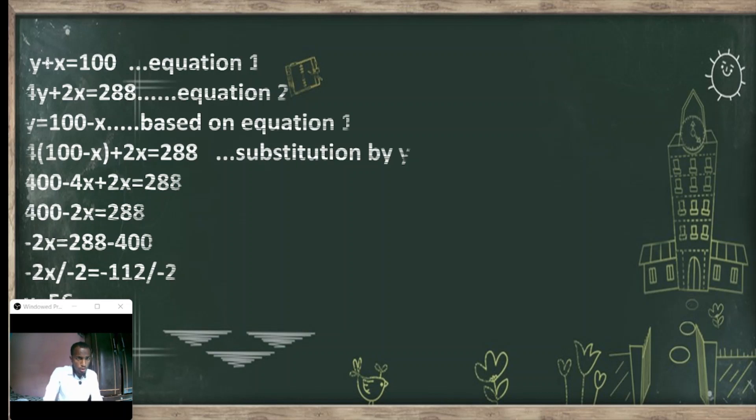Based on equation 1, y equals to 100 minus x. We take x to the right side, it will be minus x. So y equals 100 minus x. We will substitute by y. We have 4y plus 2x, so we substitute by y: 4 times (100 minus x) plus 2x equals 288.